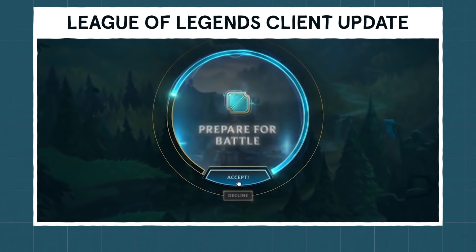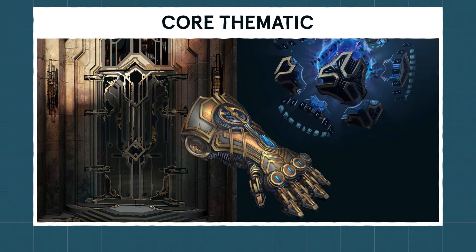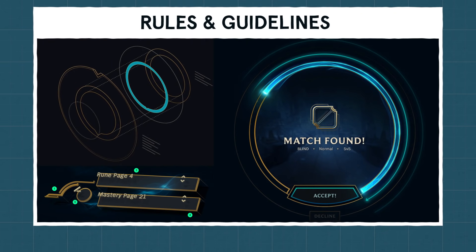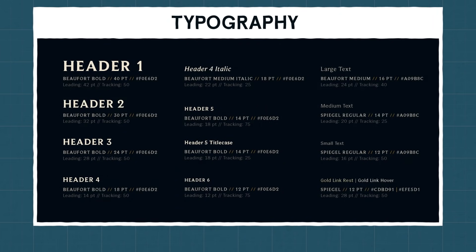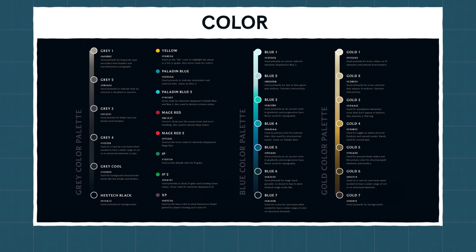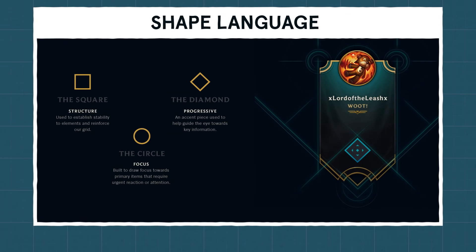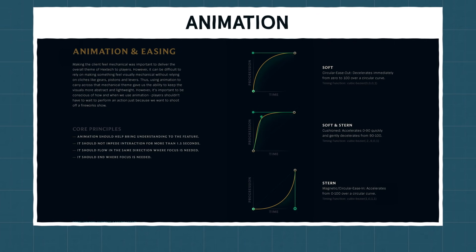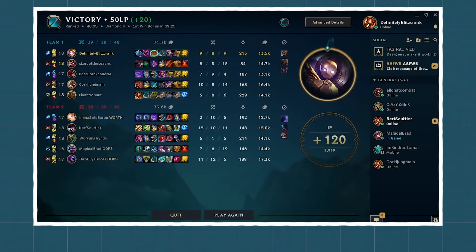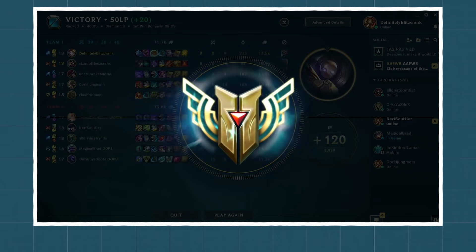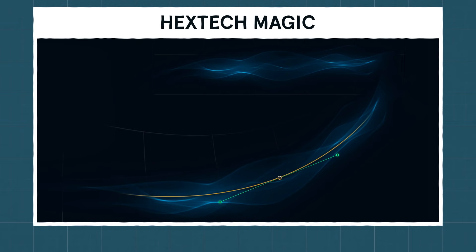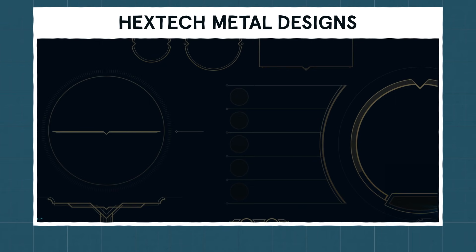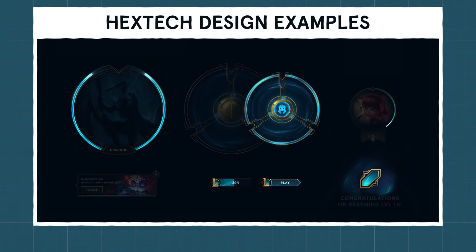We can look at the development of the League Clan update as an example. We started the client redesign by defining the core thematic behind our UI. We then came up with very specific rules and guidelines for the style — like typography, iconography, color, shape language, animation — everything you see and interact with in the client. One of the core parts of the thematic is Hextech magic. Incorporating Hextech into the client was a chance to define and reinforce the look and feel, and all the visual design decisions we made had this in line.